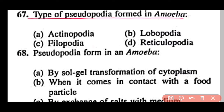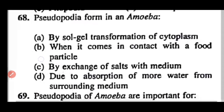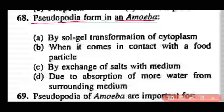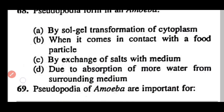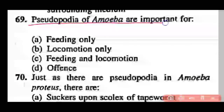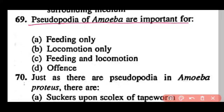Question 67: The type of pseudopodia formed in Amoeba is actinopodia, lobopodia, filopodia, or reticulopodia? Correct answer is option B. Lobopodia is the type of pseudopodia present in Amoeba. Question 68: Pseudopodia form in Amoeba by sol and gel transformation of cytoplasm when it comes in contact with a food particle, by exchange of salt with medium, or due to absorption of more water from surrounding medium. Correct answer is option A. Question 69: Pseudopodia of Amoeba are important for feeding and locomotion (option C).